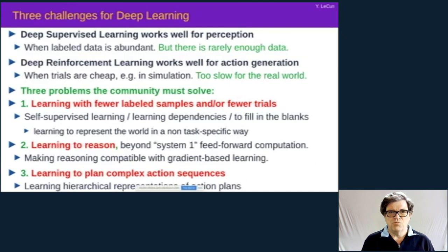So there are really kind of three challenges in deep learning AI and machine learning today. One is of course diminishing the requirement for label samples and reinforcement interactions, and in my opinion that goes through self-supervised learning as I just mentioned. Self-supervised learning really is learning dependencies between variables, learning to fill in the blanks, learning to represent the world, learning to predict.